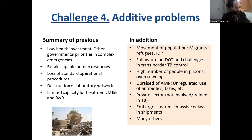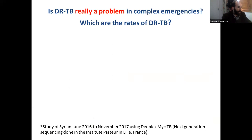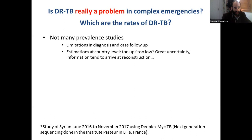Is drug-resistant TB really a problem in complex emergencies? Do we have rates of drug-resistant TB? Not really — some of these countries have been completely forgotten. There are no ways to do prevalence studies, first because there is no diagnostic capacity, and sometimes because of security. Everything is based on estimations, which can be too high or too low. For example in Iraq, estimations have changed — probably better than initially thought. There is an important level of uncertainty, but all the ingredients for antimicrobial resistance and drug-resistant TB are present.